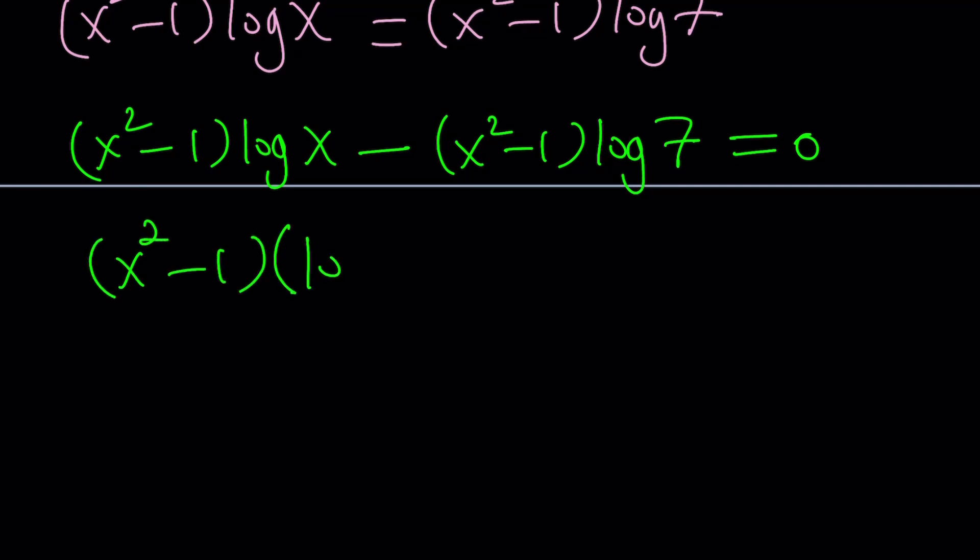Now, x squared minus 1 is a common factor, so we can take it out. Let's do it. And inside, we're going to get log x minus log 7, right? Now, this is nice because it gives us two factors which we can set equal to 0 and solve.